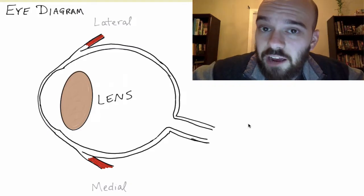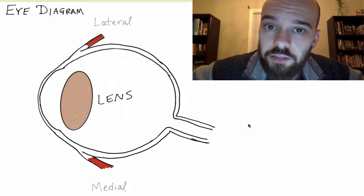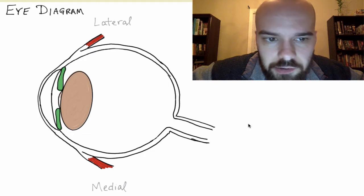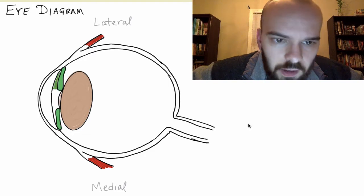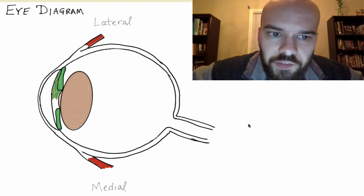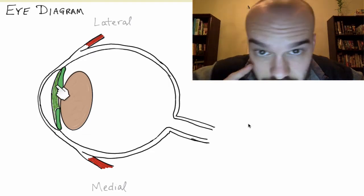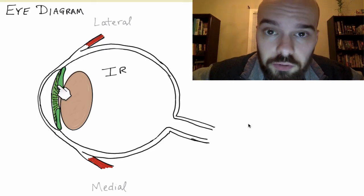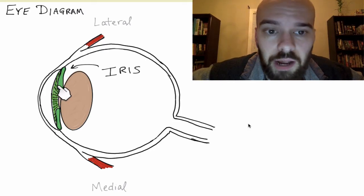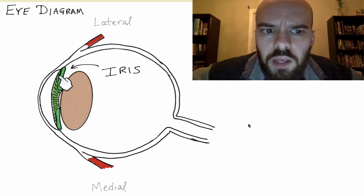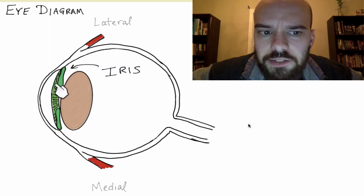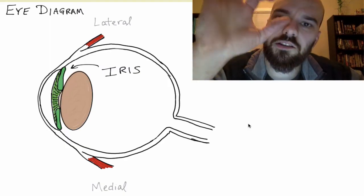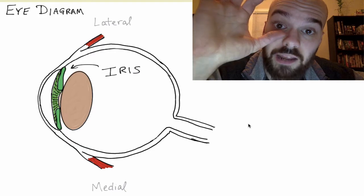Up next we have the colored part of your eye called the iris. This iris in the diagram is green. My irises are brown. Your irises might be blue or green or brown. If you look on the iris, you see these little lines, and that's because the iris can contract and expand.